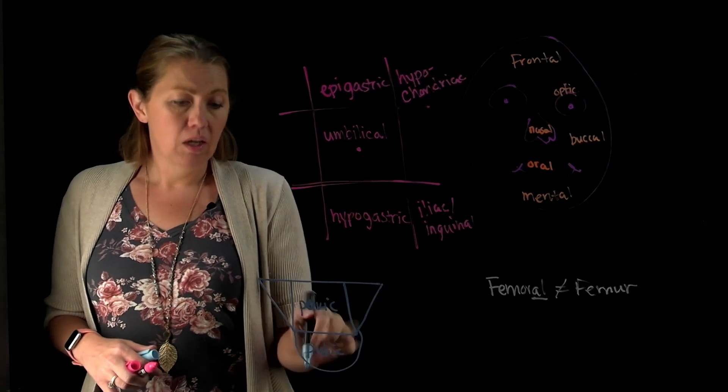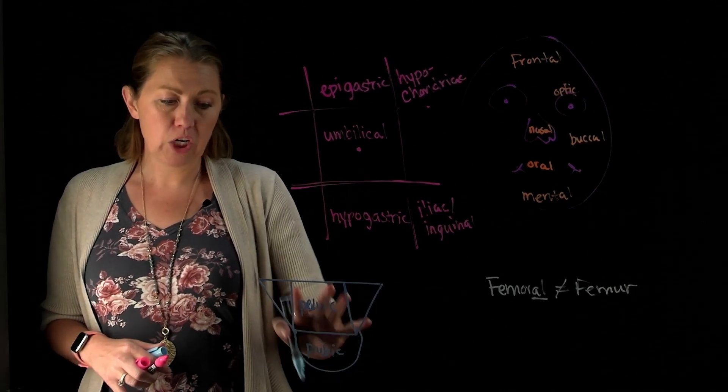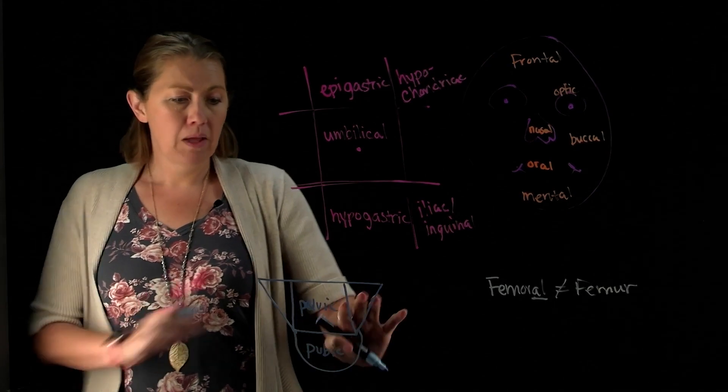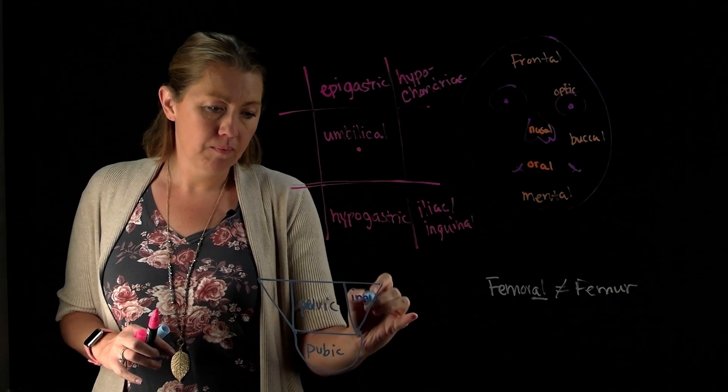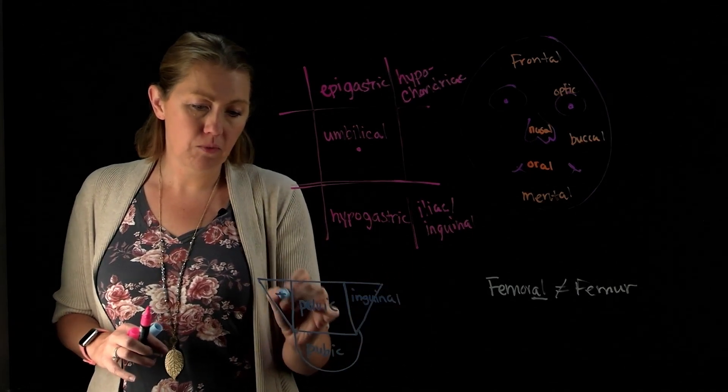Pelvic would be that region kind of center and above that, between where the hips are. The little V's here, that's where you'll see your inguinal, and so it repeats over there as well. Inguinal kind of laying over top here, you would see pelvic and hypogastric also being relatable terms.